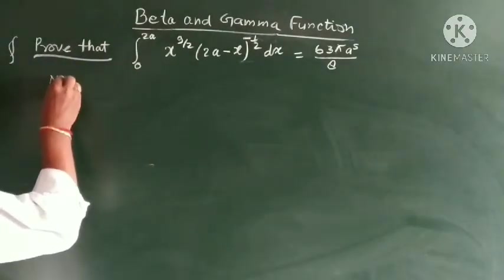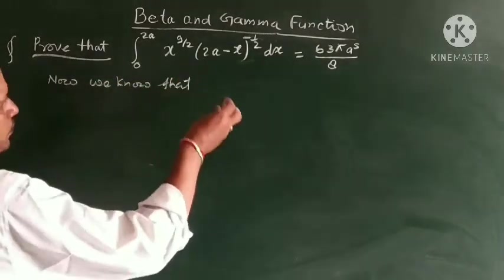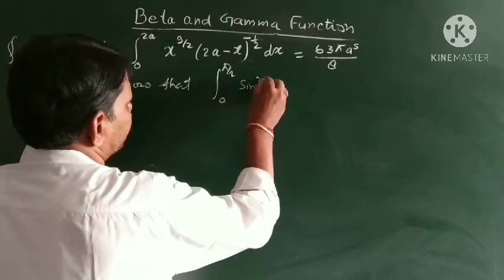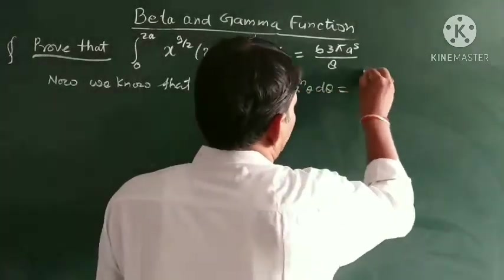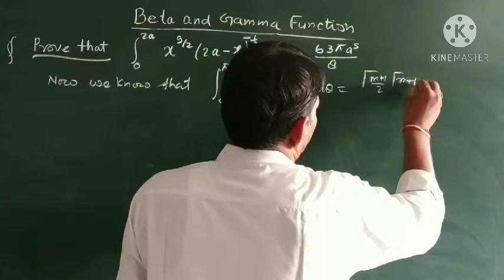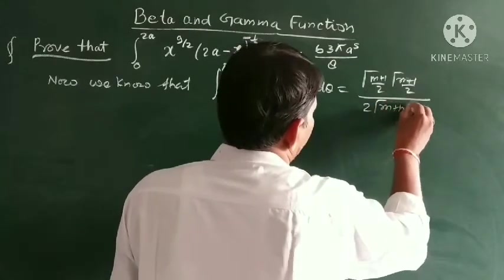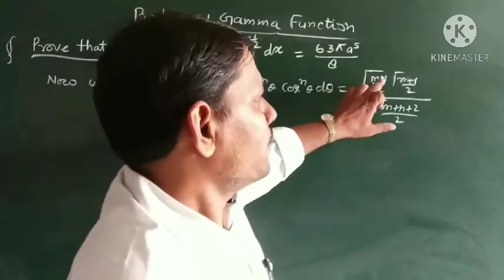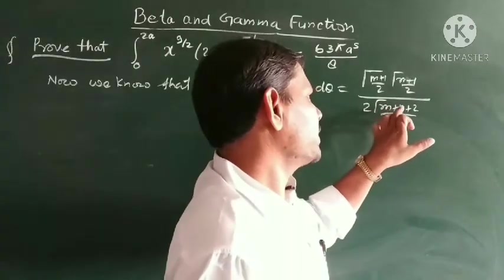We know that the integral of 0 to π/2 of sin to the power m θ, cos to the power n θ dθ is equal to gamma((m+1)/2) · gamma((n+1)/2) divided by 2 · gamma((m+n+2)/2).